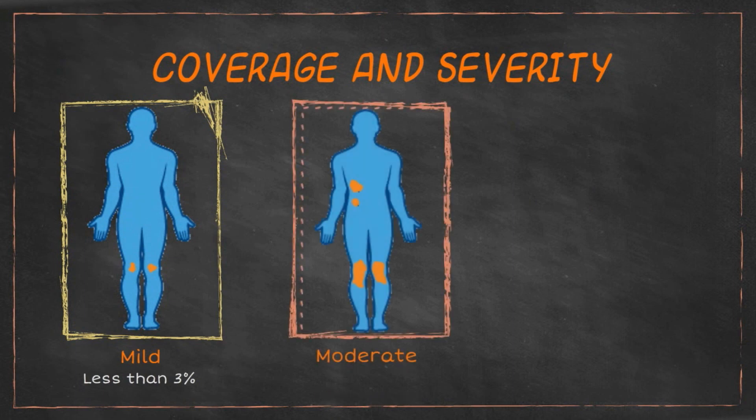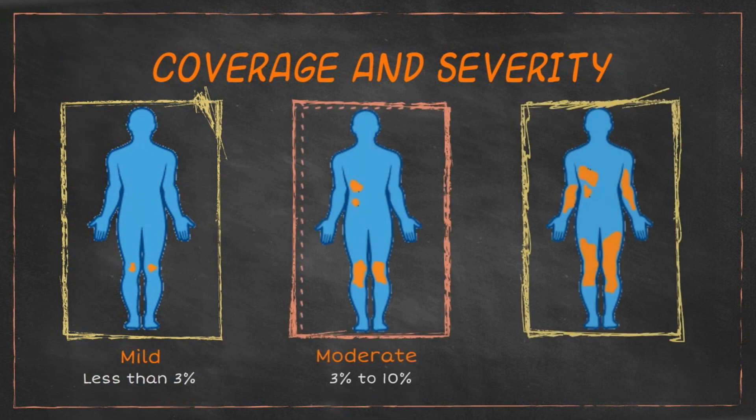Secondly, psoriasis can be moderate, covering 3 to 10%. And lastly, in severe cases, it can cover over 10% of your body. As you can see from these representative figures, most of the time, psoriasis tends to present itself in the elbows and knee areas.